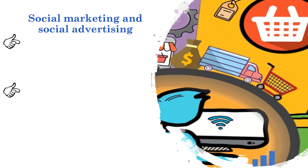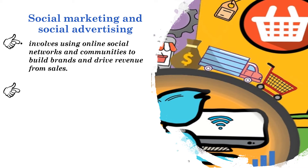Social marketing and social advertising involves using the online social networks and communities to build brands and drive revenue on sales. There are several types of social networks ranging from Facebook to Twitter, to social apps and social games, blogs, and forums. Companies invested about $4.2 billion in social media in 2013, which was expected to rise to $6.45 billion by 2015. It is the fastest growing form of online marketing along with mobile marketing.